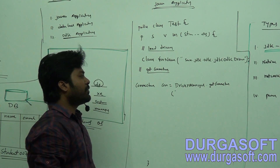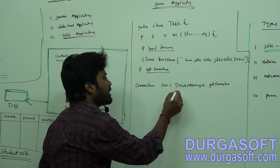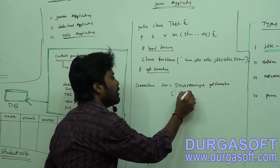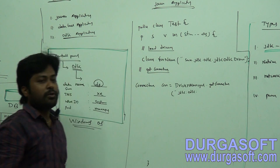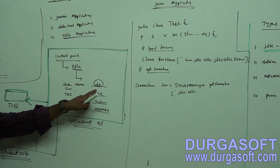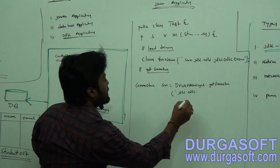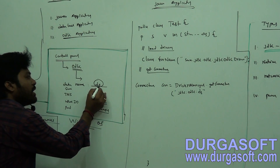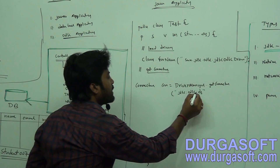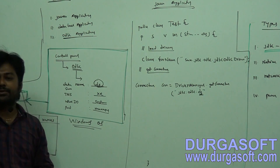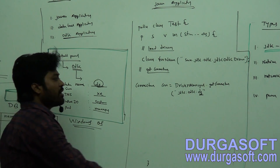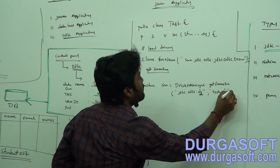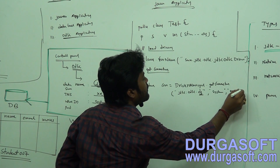Using the getConnection() method, you need to pass your URL, username, and password. The URL format is: DriverManager.getConnection("jdbc:odbc:your_data_source_name"). My data source name is 'ds', along with username 'system' and password 'manager'.